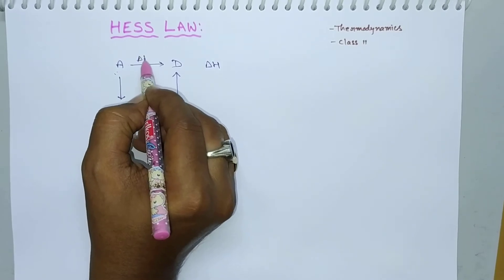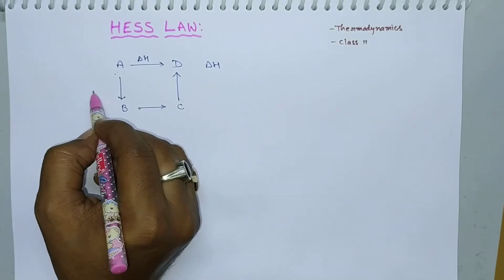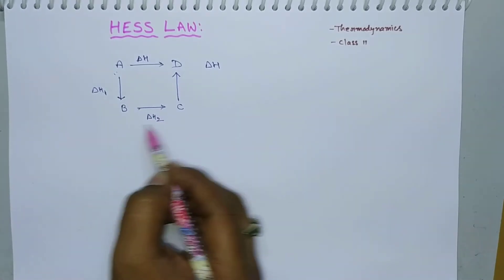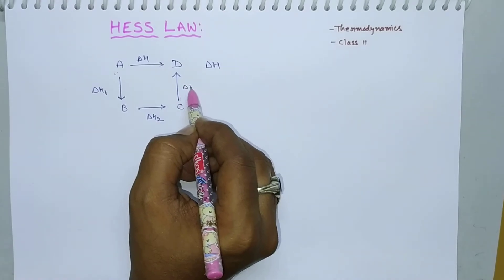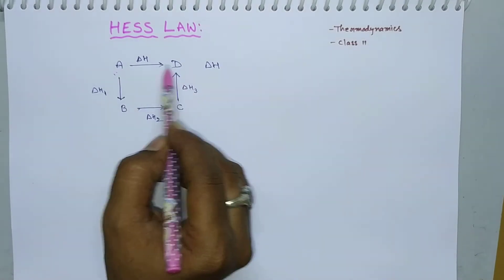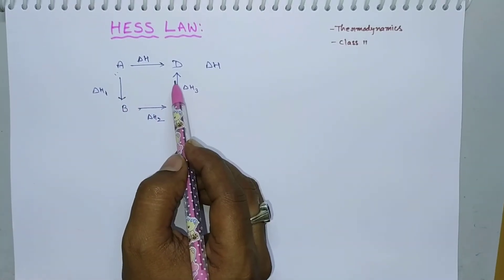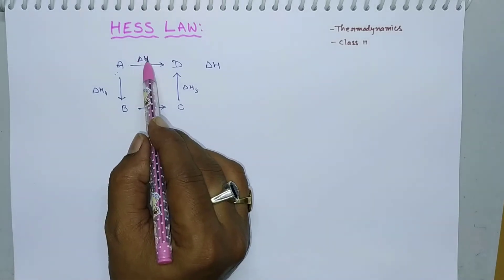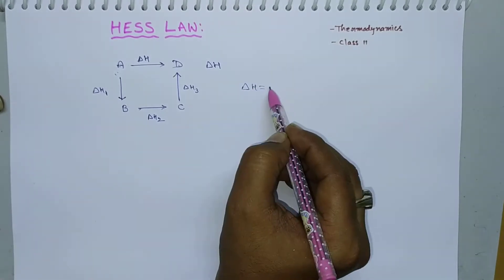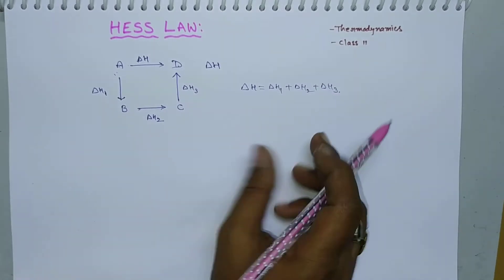For the conversion of A to D, let the enthalpy change be delta H. For A to B, let it be delta H1; for B to C, delta H2; and for C to D, delta H3. Whatever may be the number of steps, the enthalpy change during conversion of A to D is the same. That means delta H equals delta H1 plus delta H2 plus delta H3.